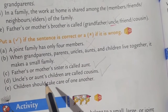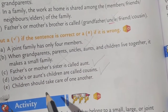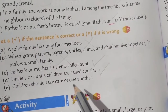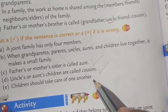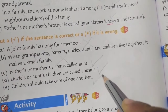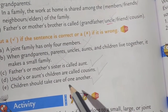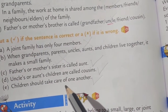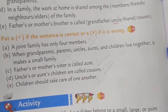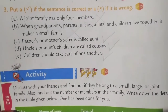Then E: 'Children should take care of one another.' Is it right or wrong? Yes, it is right. Children should take care of one another — our brother or sister will be there and they will take care of us.